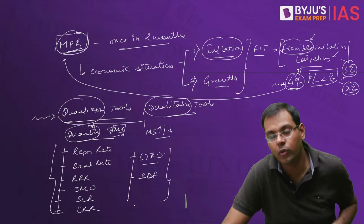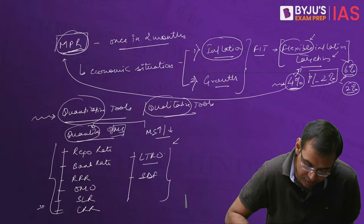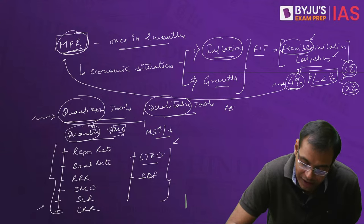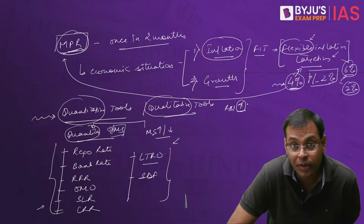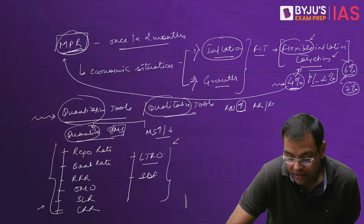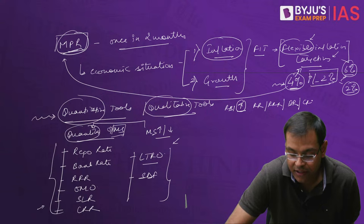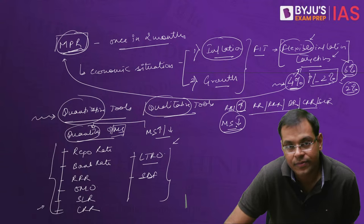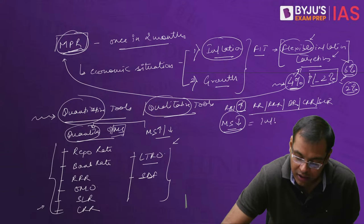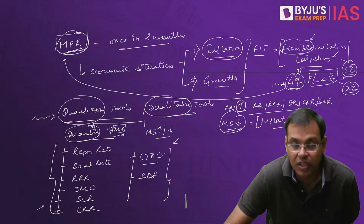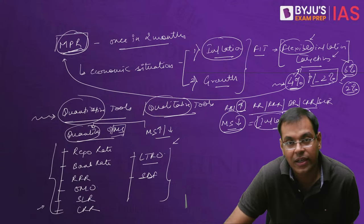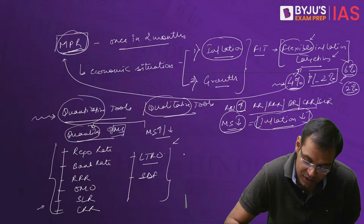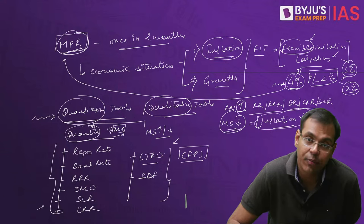When RBI increases interest rates — repo rate, reverse repo rate, bank rate, reserve ratios like CRR and SLR — money supply goes down in the economy. When money supply goes down, it results in a reduction of inflation. This is primarily the target RBI has taken into consideration. The inflation being targeted is Consumer Food Price Inflation, CFPI — not CPI broadly, but specifically food price inflation.